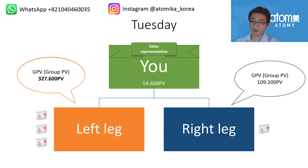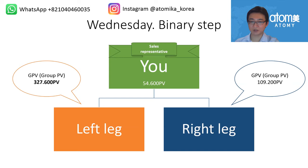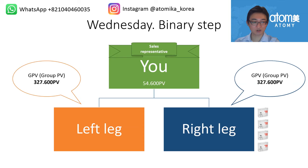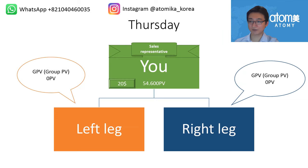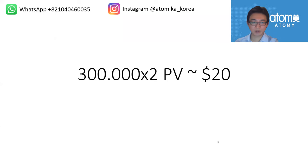If on Tuesday you have enough group PV on your left leg but not enough on your right, it continues from the same amount on Wednesday. Let's say on Wednesday people on your right leg bought four HemoHIMs — now you have enough group PV in both legs. That group PV converts to money and you receive your binary step reward. On Thursday, your group PV resets to zero and you start accumulating again.